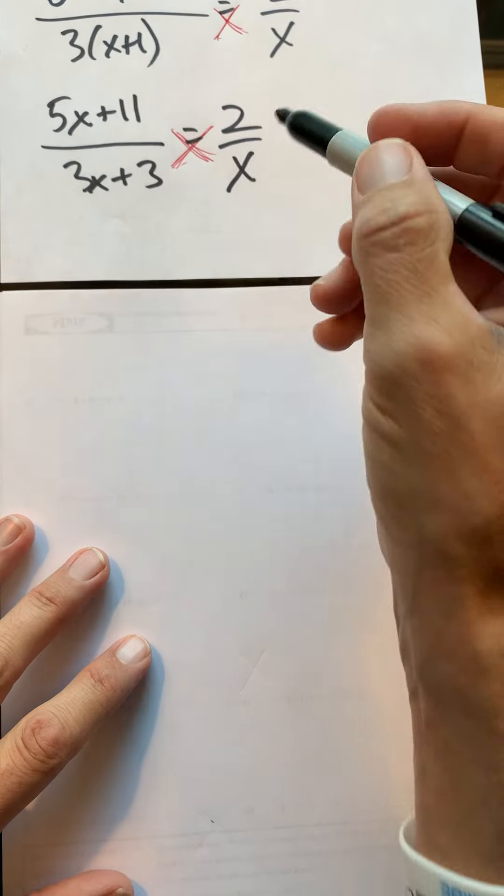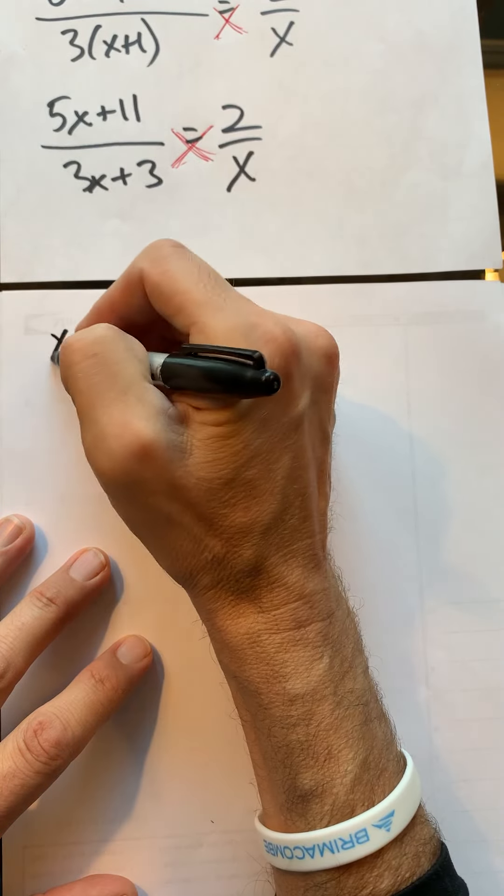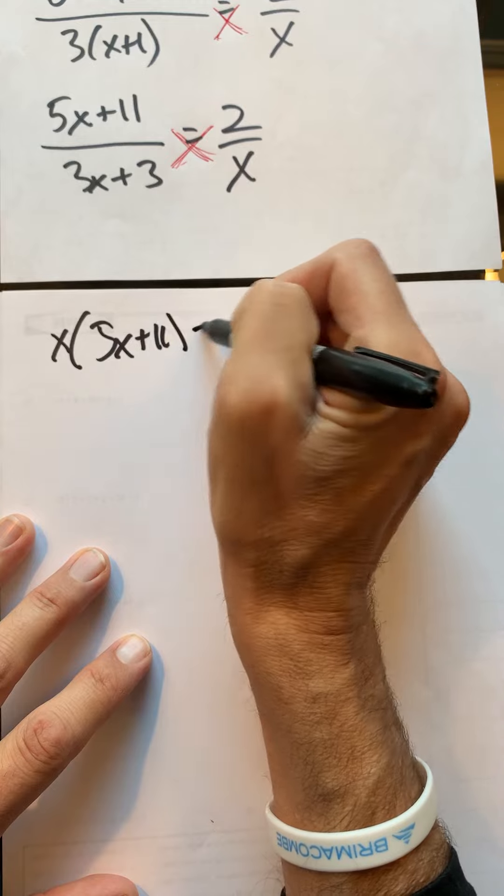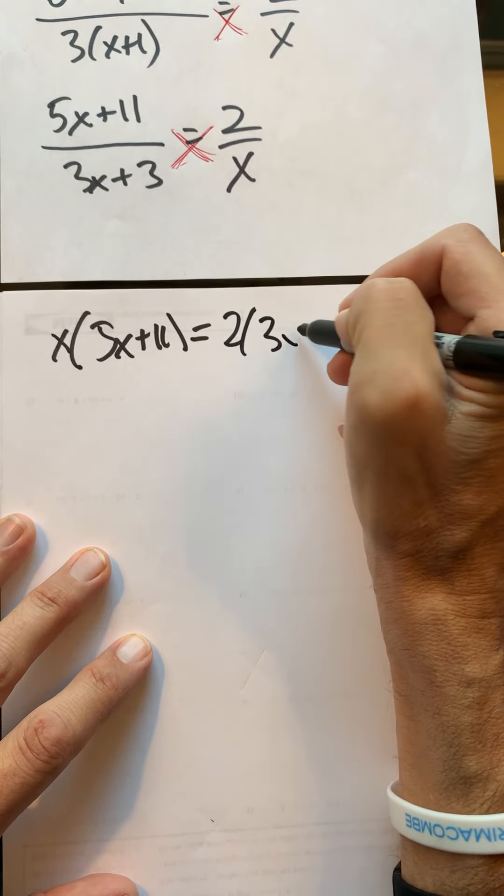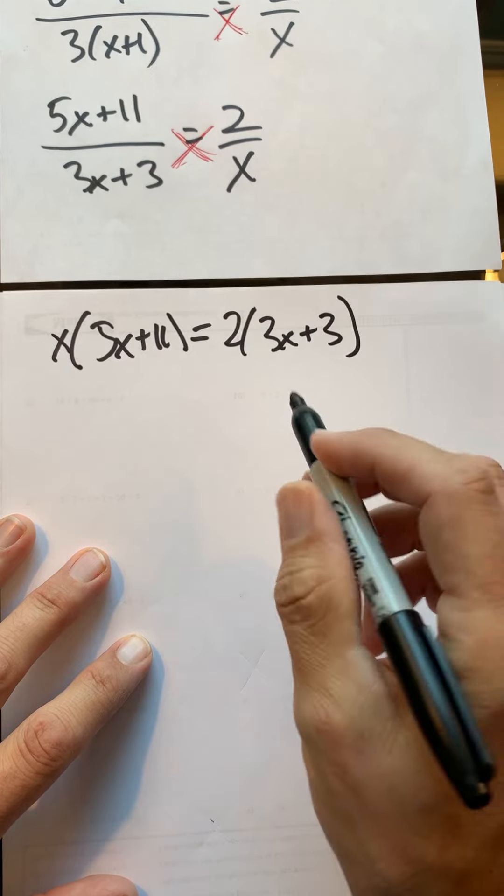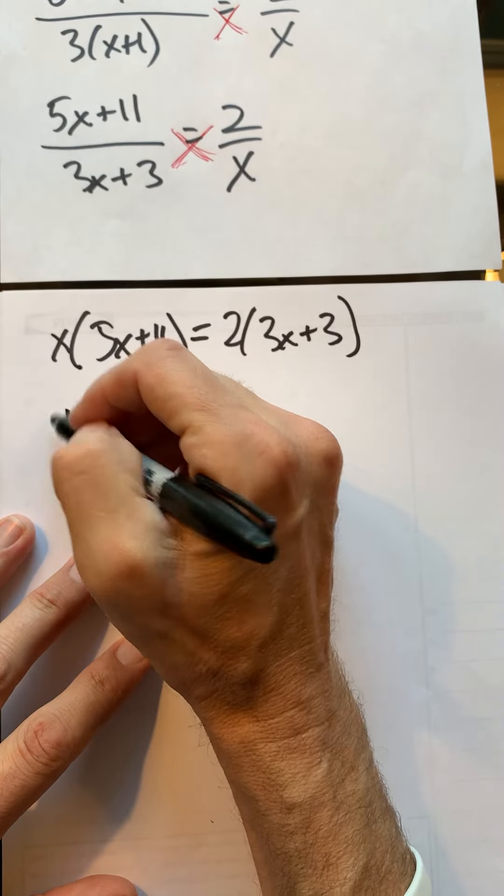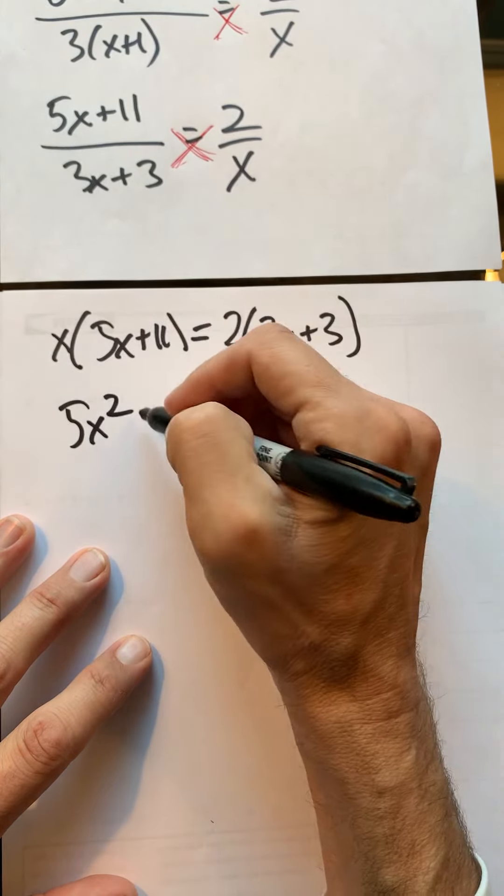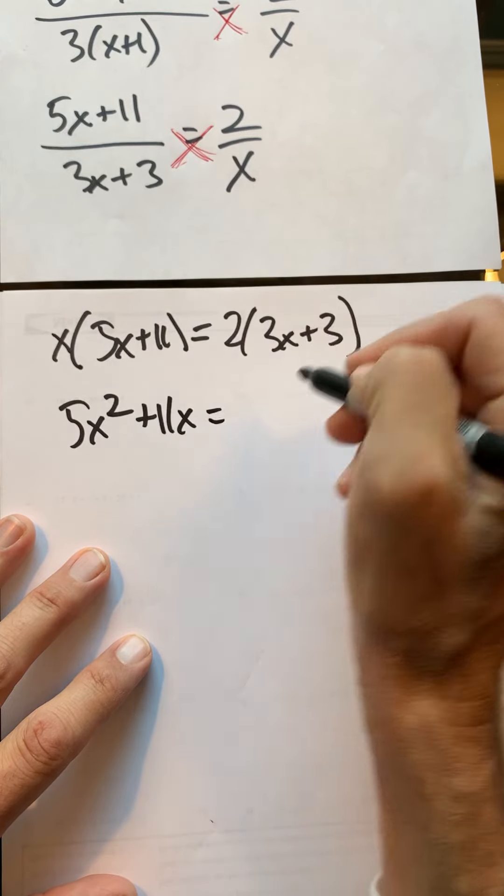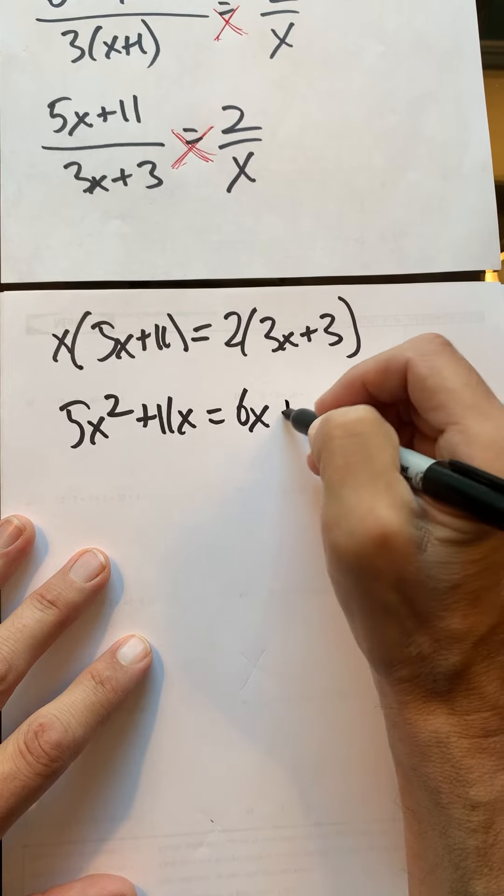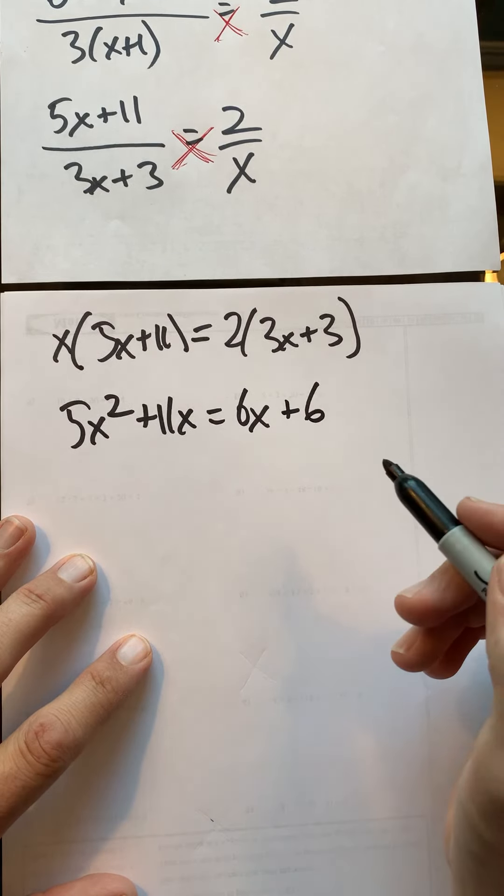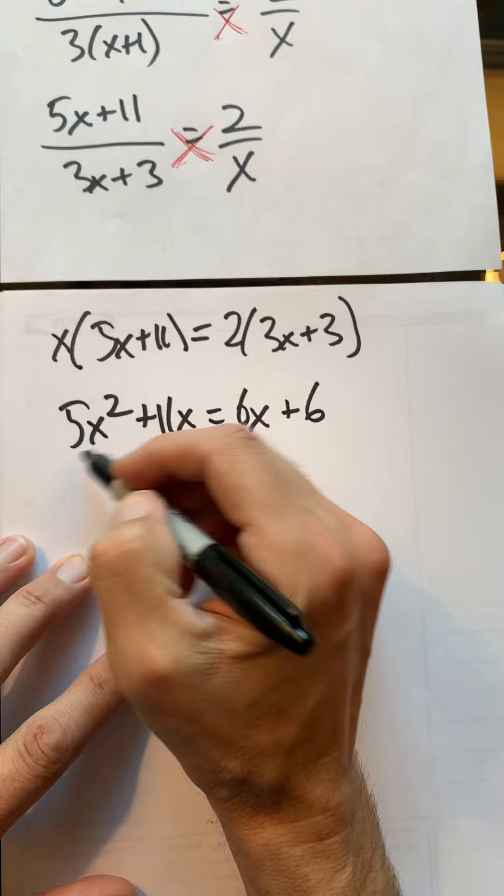I'm going to have x times everything up here, so x(5x + 11) equals 2 times everything down there, 2(3x + 3). That's going to leave me with x times 5x is 5x², x times 11 is +11x, equals 2 times 3 is 6x, and 2 times 3 is 6.